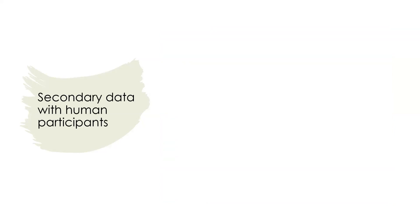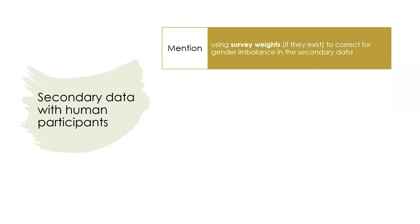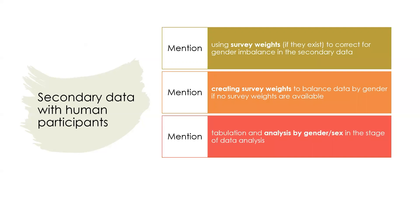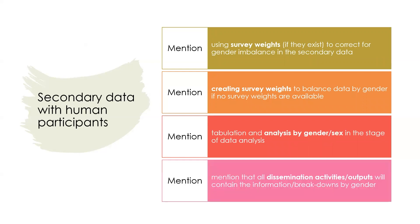If you're planning to work only with secondary data, like surveys, most of your focus might go to the data analysis stage. You could mention that you will use survey weights in your analysis to correct for gender imbalances in data, or if those survey weights do not exist, propose to create them from population data and balance them by gender, age, and other demographic categories. You should also definitely mention that you will do analysis by gender or sex and present project findings by gender in dissemination activities and outputs.